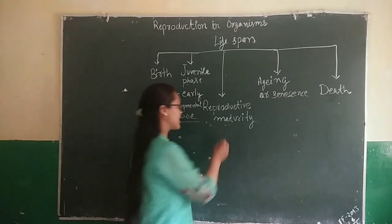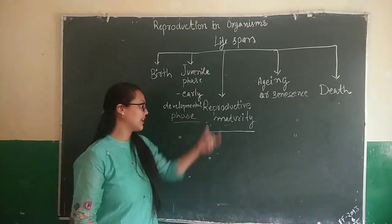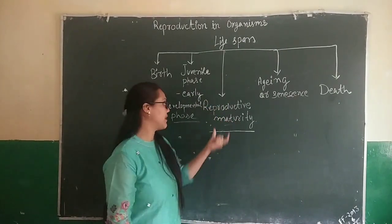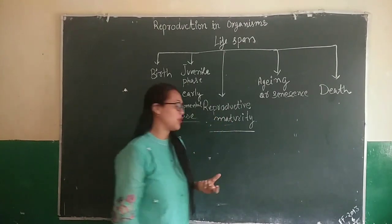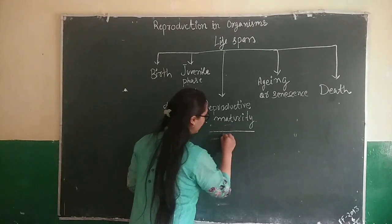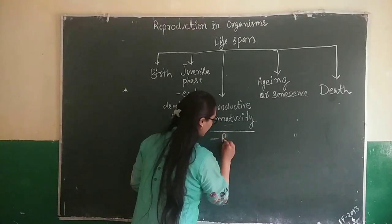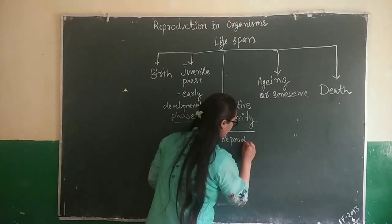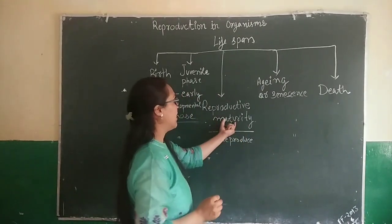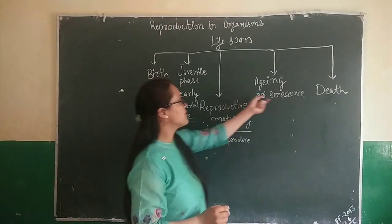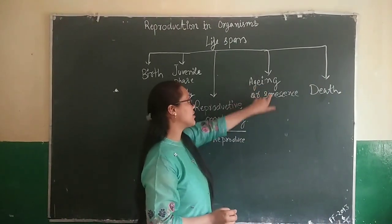The third stage is reproductive maturity. As the name indicates, in this stage of the life span the organism is reproductively mature — it can reproduce. This is the phase in which the organism will reproduce. After this phase comes the next stage, which is aging or senescence.